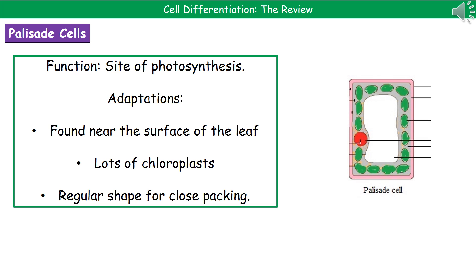Make sure that at the end of this review you know the definition of differentiation, and can recall not only the names of these specialised cells and their functions, but also their adaptations. Remember: if a question asks you to list adaptations, you can just write 'no nucleus.' If it asks you to explain the adaptations, you must add the explanation — for example, 'no nucleus to make more space for haemoglobin.' Always check the command words in the question so you don't throw away marks on what should be an easy question.